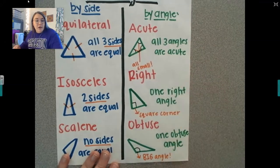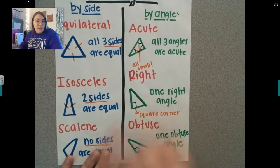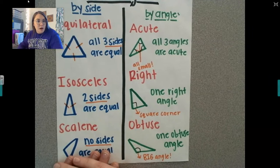Then we have a right triangle, only one right angle. So not all of the angles are right angles, only one. And same for obtuse, only one of the angles is an obtuse angle.